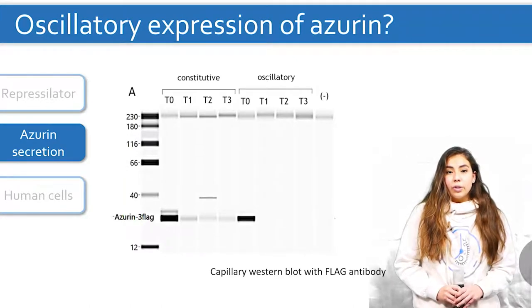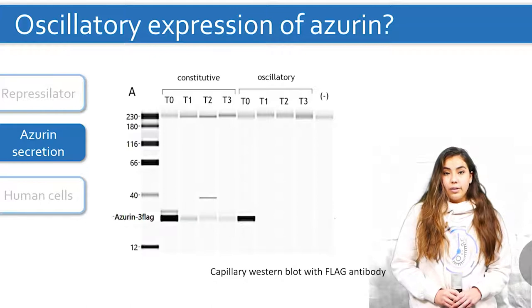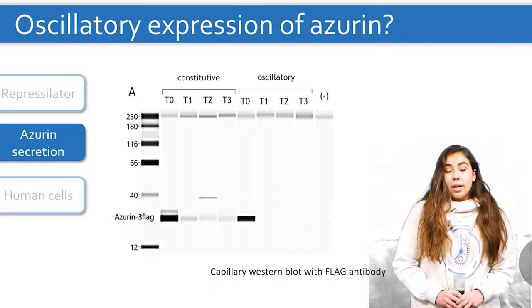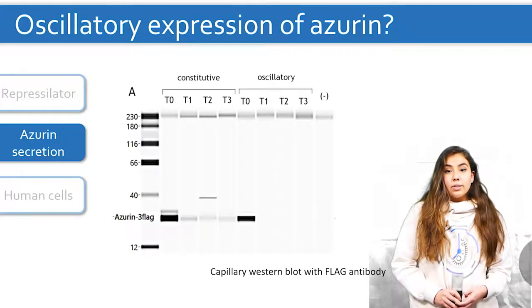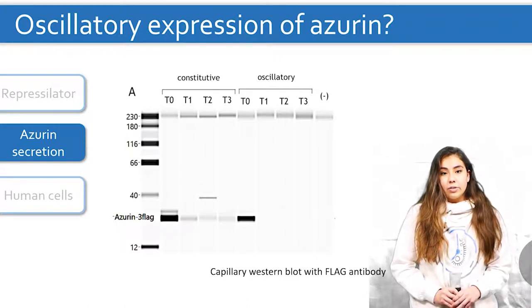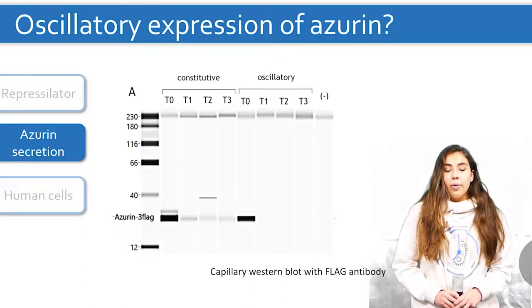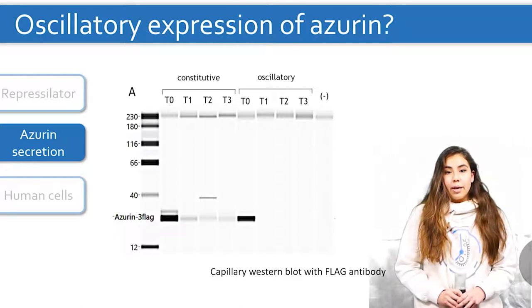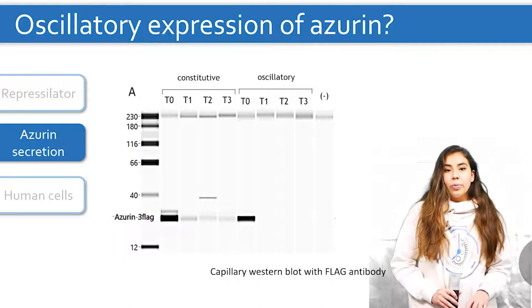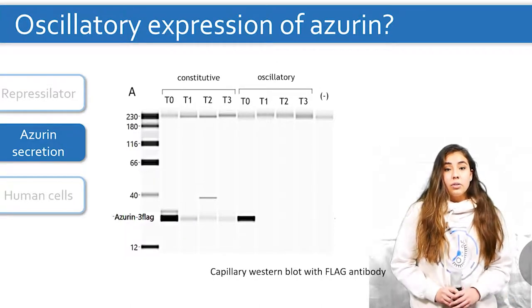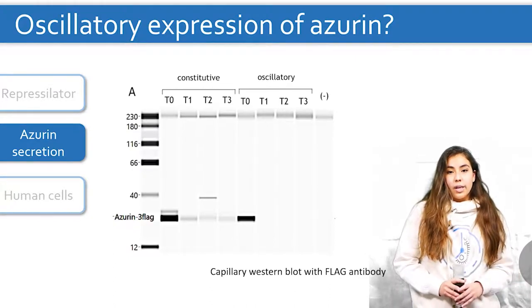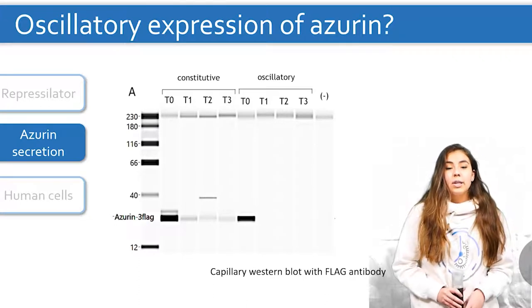Then, we tested whether the azurin expression was indeed oscillating. So we compared a constant production of azurin to an oscillating one. In this capillary western blot, we can see that for both cases, azurin is present in relatively large quantities at the start and then observe a drop in presence. However, for the constant one, we see bands of the same intensity throughout the different time points. While in the oscillatory one, we don't detect any azurin anymore. This does not allow us to conclude if the production of azurin is oscillatory, but shows that the expression of azurin in the repressilator is variable.